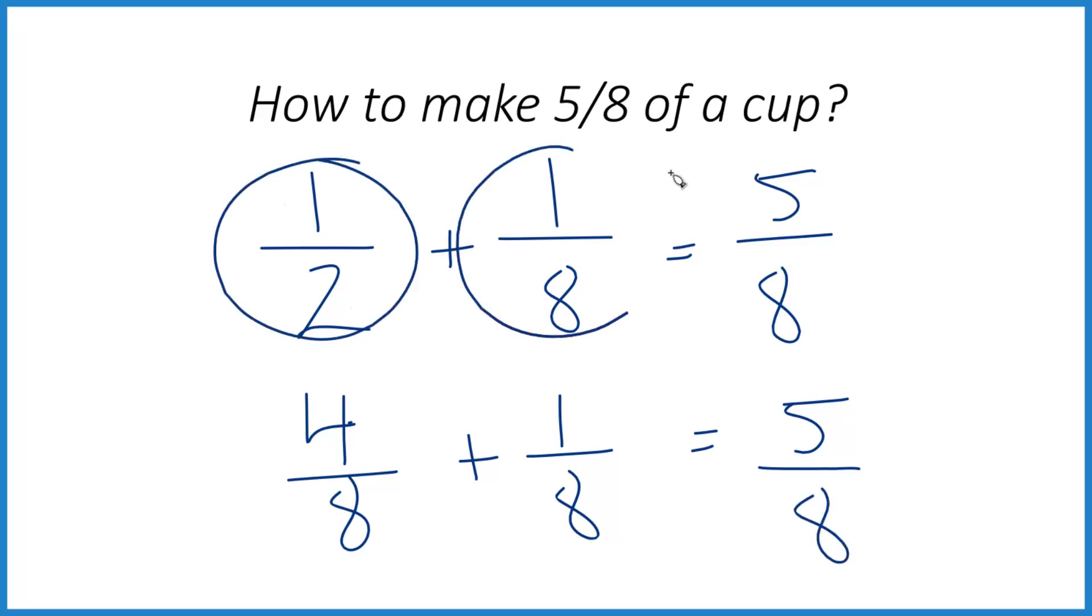If you have an 1/8 cup, probably the best way is to take a 1/2 cup plus an 1/8 cup, that'll give you 5/8 of a cup. But if you don't have an 1/8 cup measure, here's how you can do it.